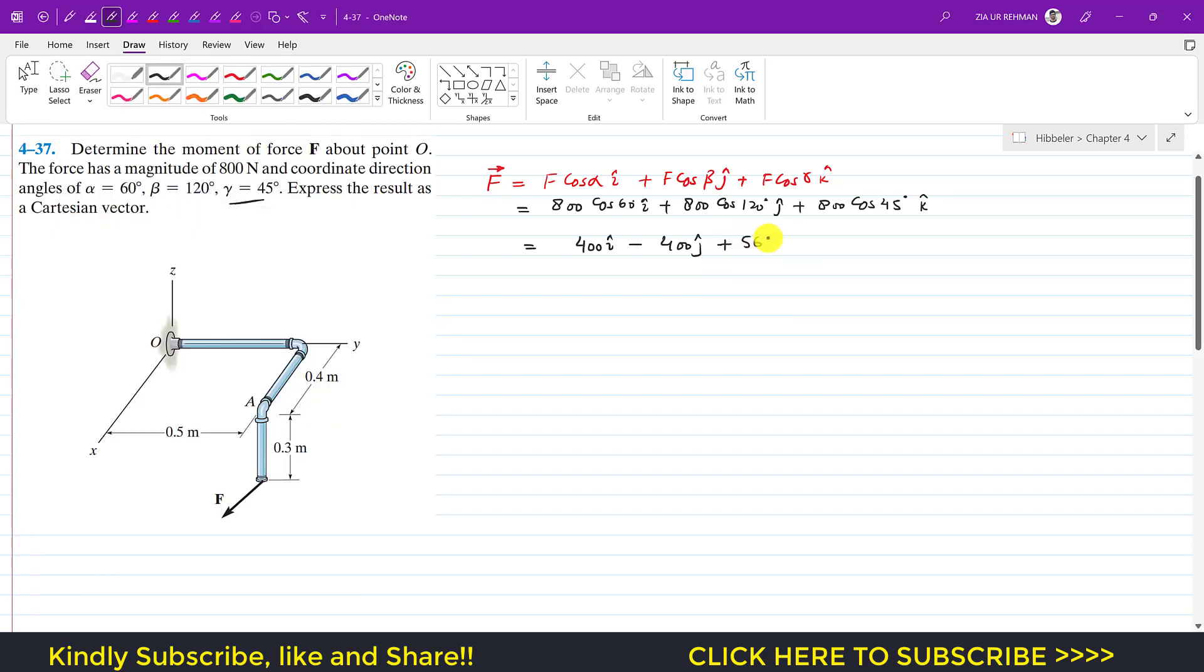So now we have to find the moment about point O. The moment about point O can be determined by using the cross product, and that will be equal to the moment arm cross that force F. Now we have to define our moment arm.